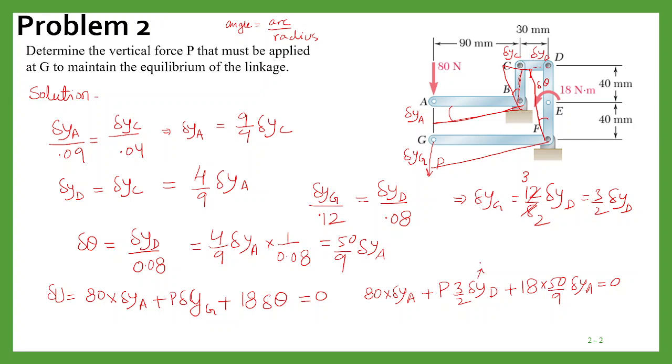And in place of y_d also, we can write delta y_a, so y_d is equal to, as we know that, 4 by 9 delta y_a.